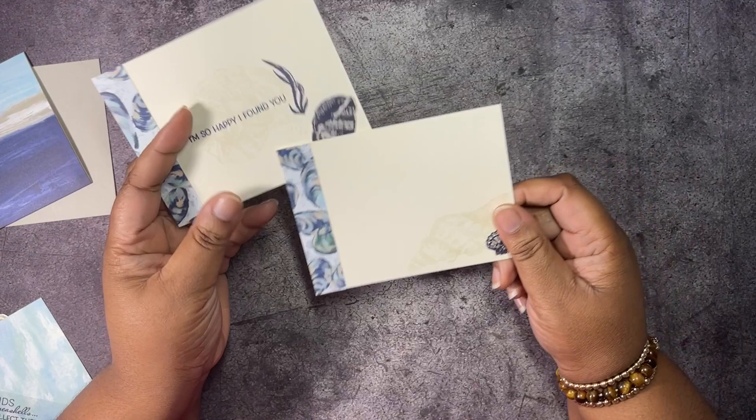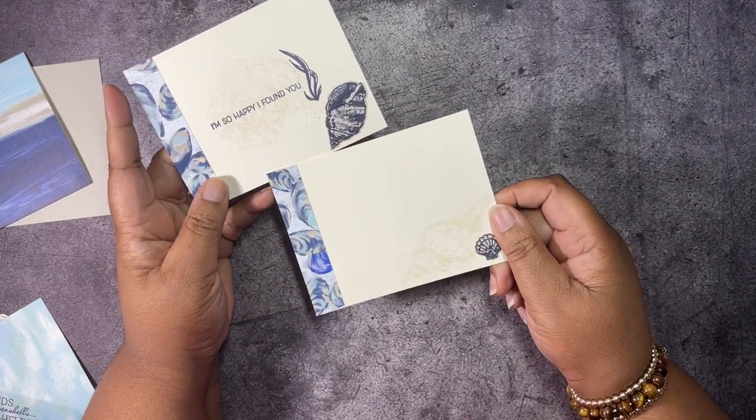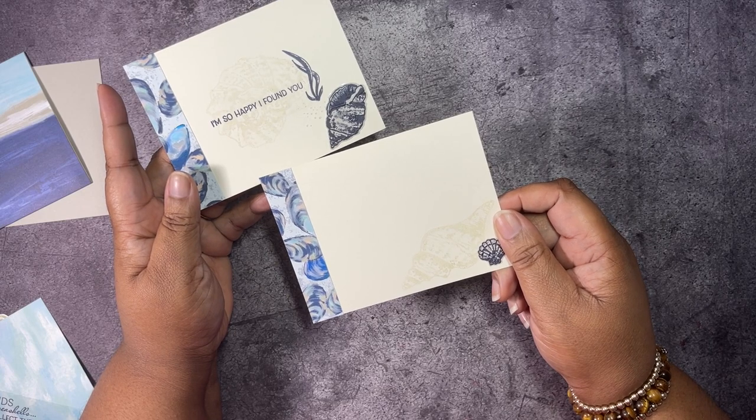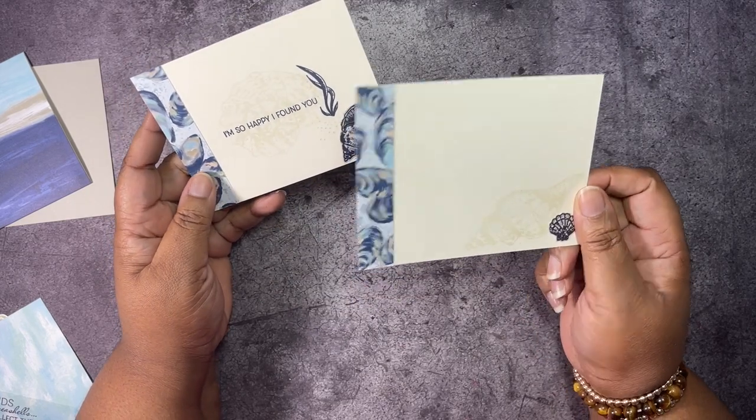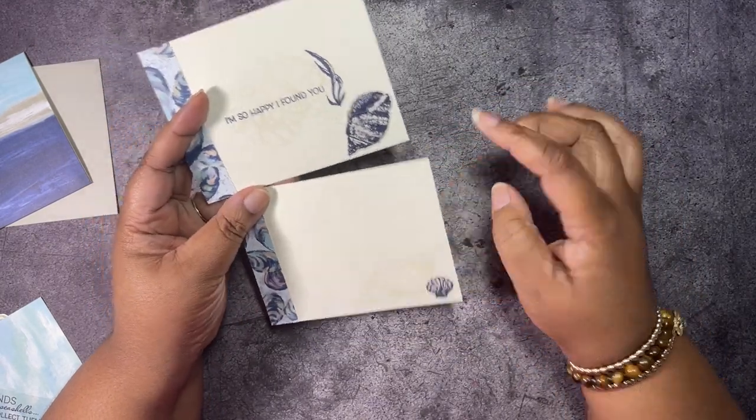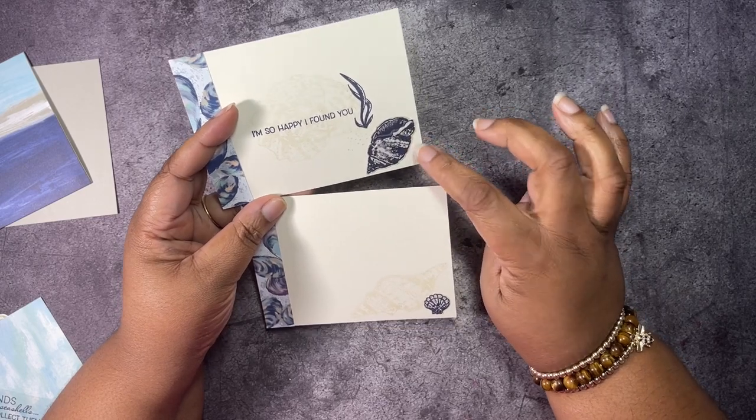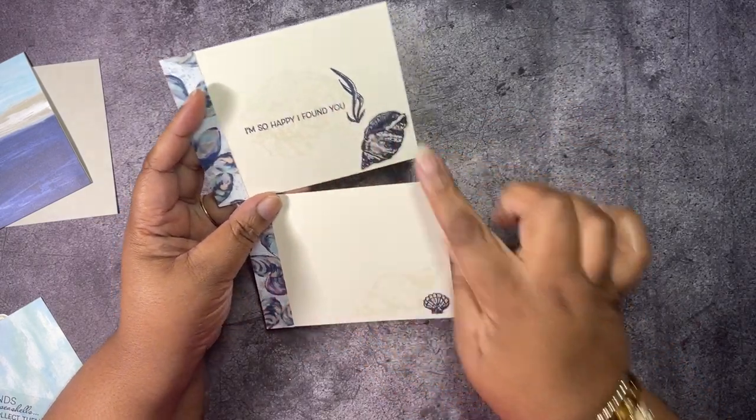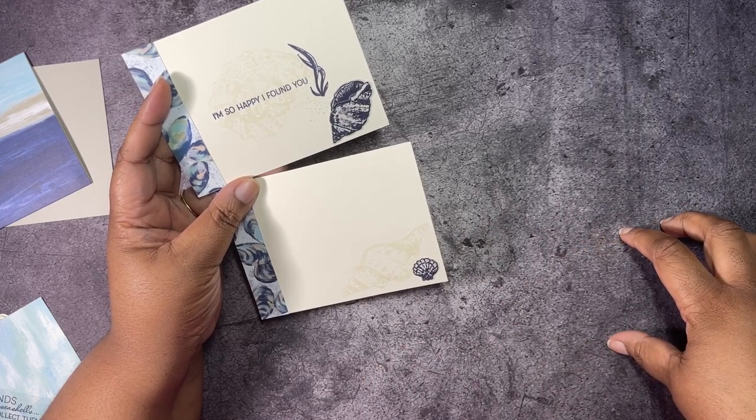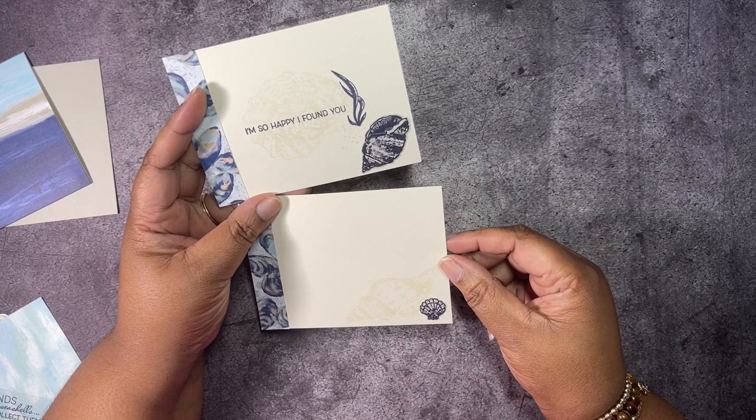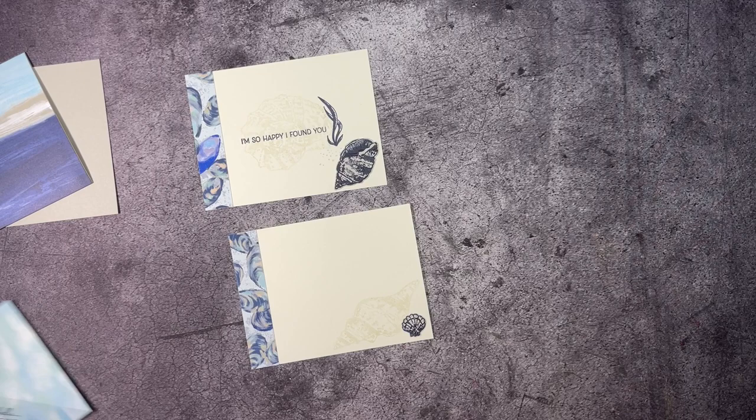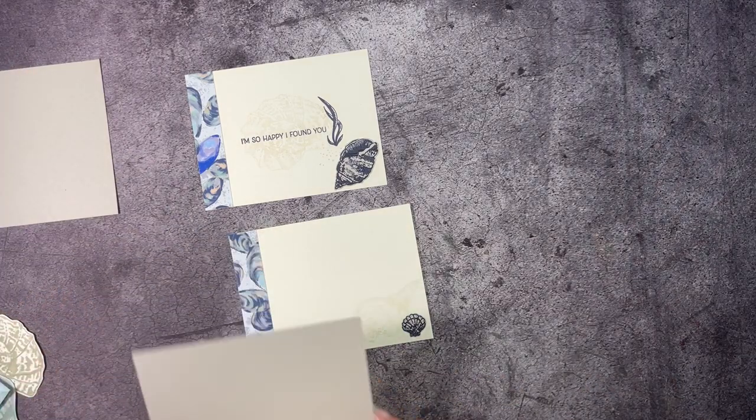I put them on two pieces of Very Vanilla. These are five by three and three quarter. You need two of them. Well you don't need two of them, I'm using two of them. And I stamped some more seashells on Sahara Sand and Night of Navy. I also stamped the seashells on here but I stamped off the Sahara Sand. I stamped it off before stamping it onto here and put some little dots and everything.